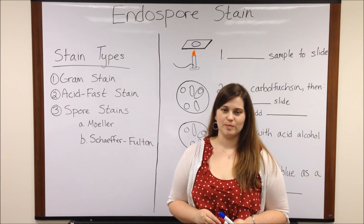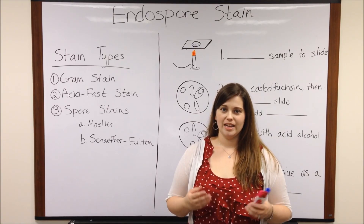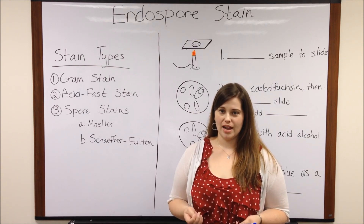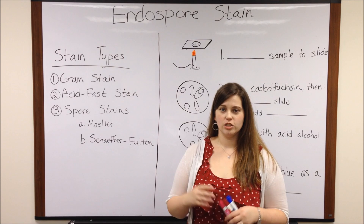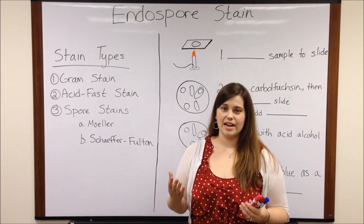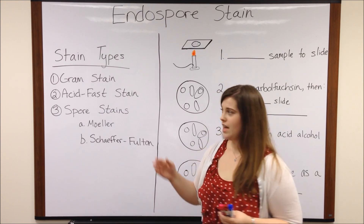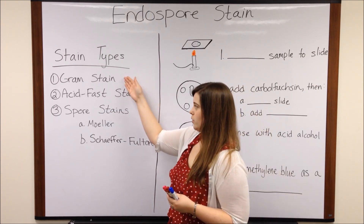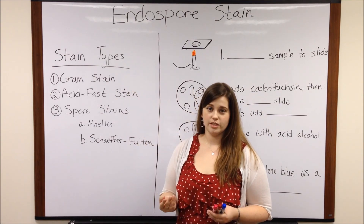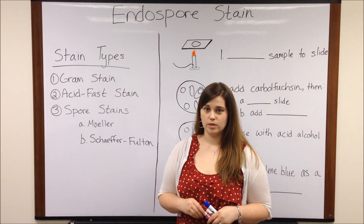Hi everyone and welcome to Biology Professor. Today we're talking about endospore stain. Biologists can use a variety of differential stains to distinguish between and identify different types of bacteria using a light microscope. These include gram stain and acid fast stain, both of which are very popular stains. If you're interested in learning more about them, see my videos on those two stains.